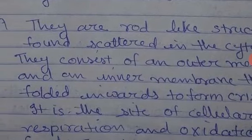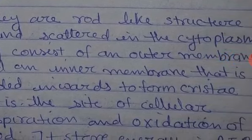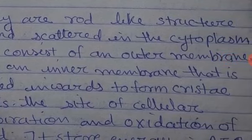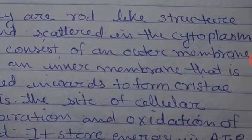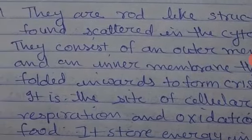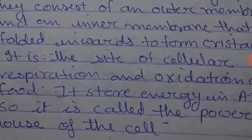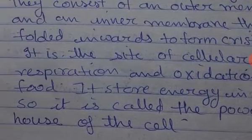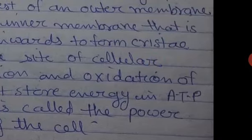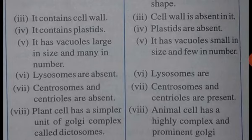Define mitochondria. Mitochondria are rod-like structures found scattered in the cytoplasm. They consist of an outer membrane and an inner membrane that is folded inward to form cristae. It is the site of cellular respiration and oxidation of food. It stores energy in ATP, so it is called the powerhouse of the cell.